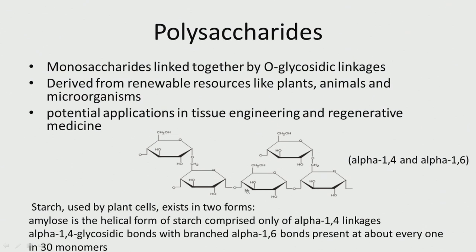So we have alpha 1,4 linkage and alpha 1,6 linkage. Now if you look at starch, it exists in two forms. One is called amylose, the helical form of starch containing only alpha 1,4 linkage — it will be like a straight line with this type of linkage. The other form has alpha 1,4 but after every 30 monomers you will have one alpha 1,6 bond, creating branching. So alpha 1,4 forms a straight/helical chain, while the occasional alpha 1,6 creates branching.